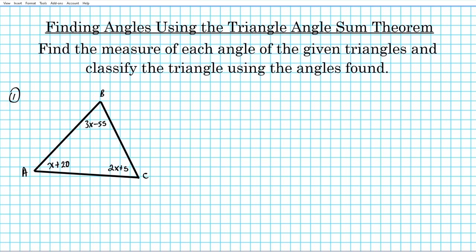Let's go ahead and find the measure of each angle. To do that, let's outline the steps we're going to use for the problem solving process. First, we're going to find x — the variable x. You notice the angles are all dependent on x, so we find x using the triangle angle sum theorem.